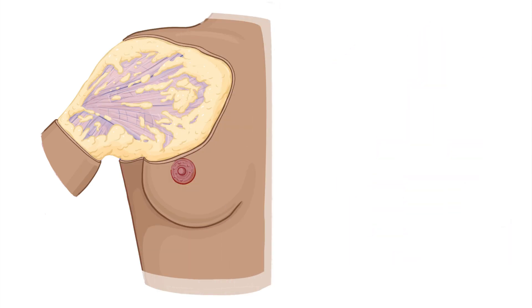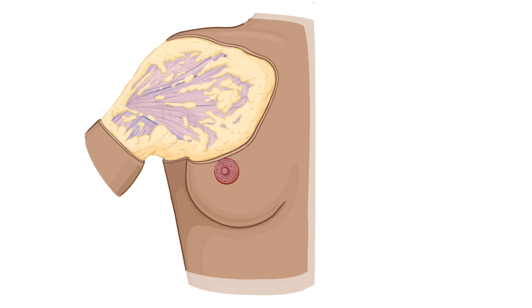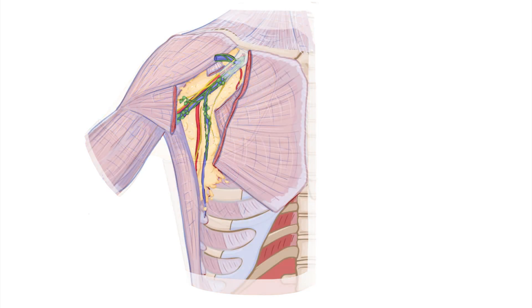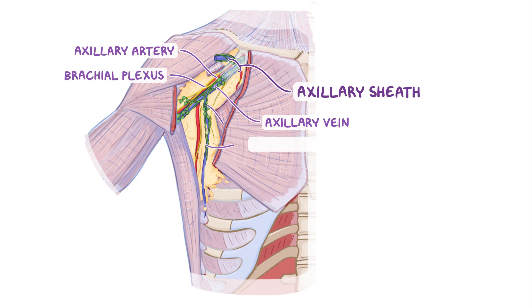Let's move on to the contents of the axilla. Right below the skin, there's a lot of fat and connective tissue. If you dissect deeper, you will see the axillary sheath that surrounds the axillary vein, which is the most superficial, as well as the axillary artery and the surrounding brachial plexus. The axilla also contains lymphatic vessels and axillary lymph nodes.